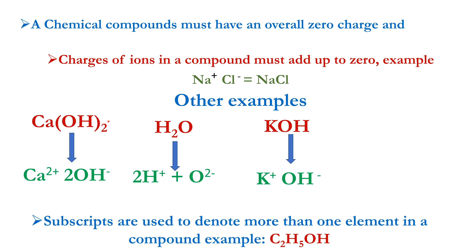Let's look at other examples. Calcium hydroxide: calcium has a positive charge of plus two and we have two OH minus, so two negative plus two positive equals zero — that's why calcium hydroxide is neutral. For water, we have 2H plus and oxygen 2 minus, so two positive plus two negative equals zero. Potassium hydroxide: potassium has a positive charge and OH has a negative charge, so negative and positive equal zero — that's why potassium hydroxide is neutral.